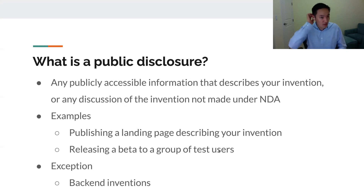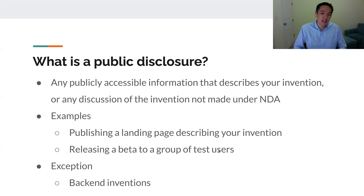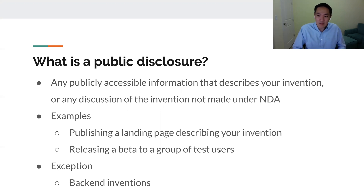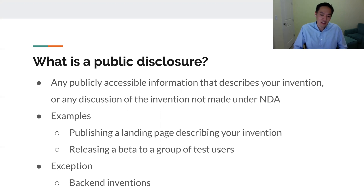So naturally, the question is: what is a public disclosure? Public disclosure is any publicly accessible information that describes your invention, or any discussion of the invention not made under NDA. Some examples are publishing a landing page describing your invention, or releasing a beta to a group of test users.